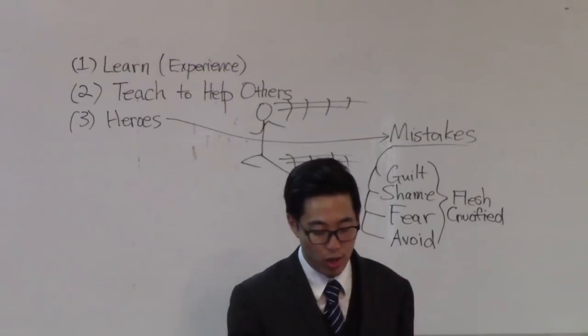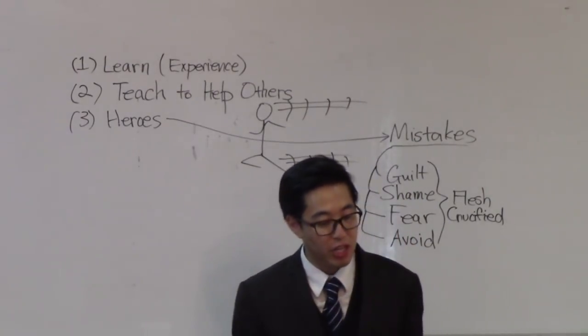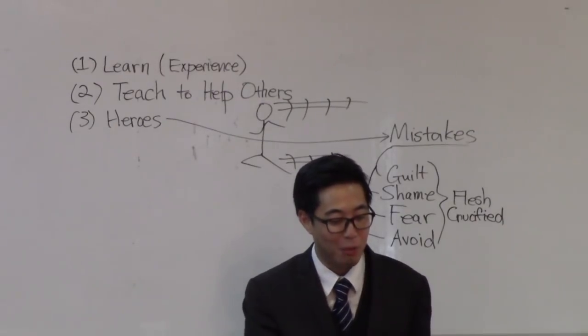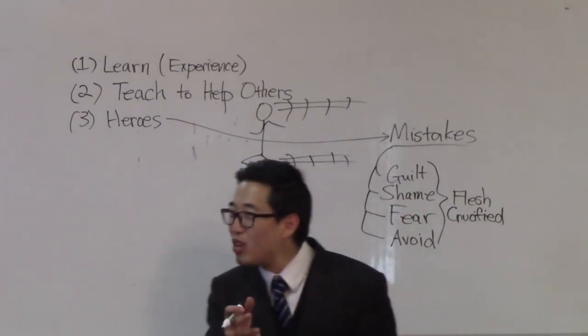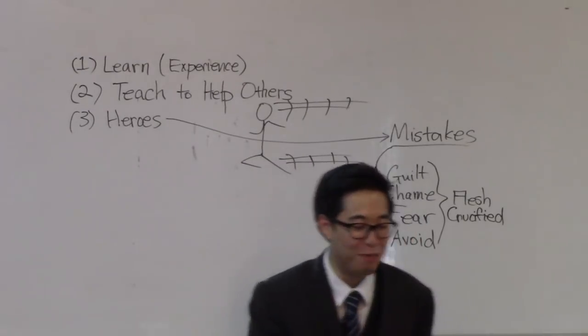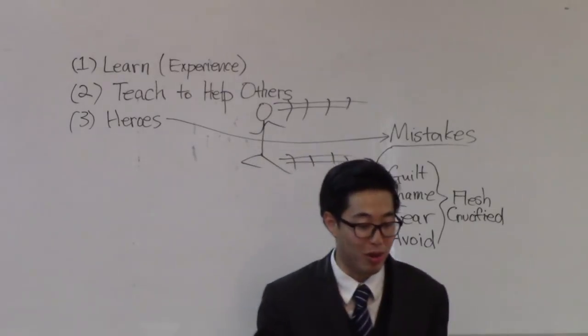Let's look at verse 20. By faith, Isaac blessed Jacob and Esau concerning things to come. No way. You've got to be kidding me. Isaac? Isaac doubted on what he ate. Is this really my son Jacob? Yeah. He that doubteth is damned if he eat, because he eateth not of faith. For whatsoever is not of faith is sin. Romans 14:20 through 22.